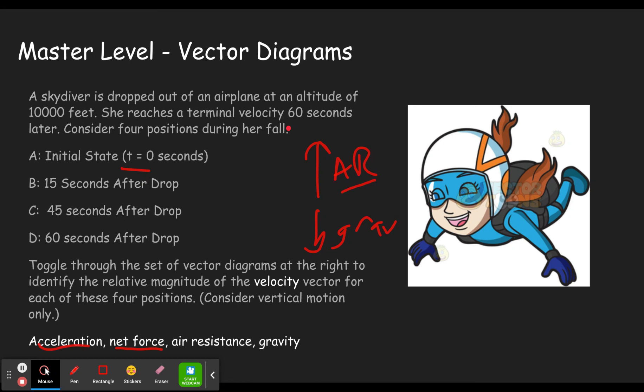Air resistance is getting bigger and bigger. It starts out at zero because the speed is zero. So there's actually no air resistance. And by the time you get down here, air resistance is so big that it matches the acceleration of gravity.